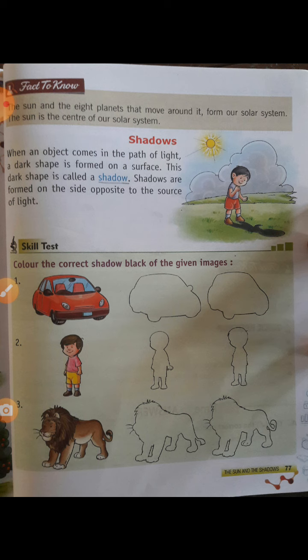यानि जो source of light होगा, प्रकाश का जो स्रोत होगा, उसके opposite दिशा में ही बनता है। Shadows are formed on the side opposite to the source of light. यानि source of light के opposite दिशा में छाया बनता है।